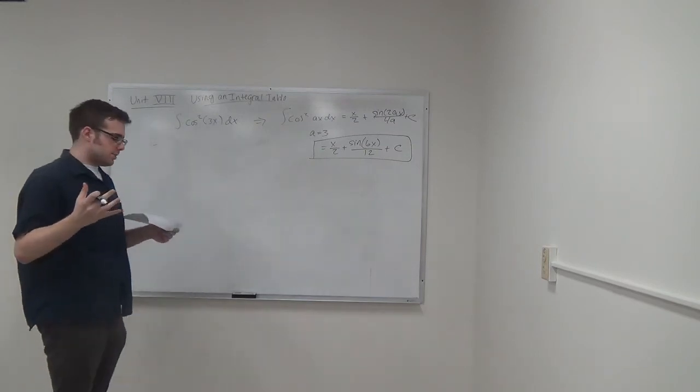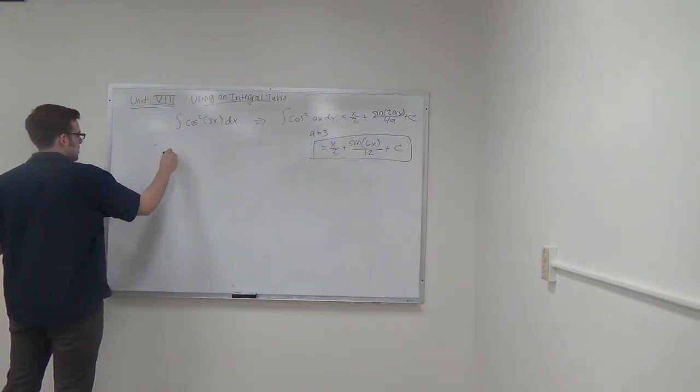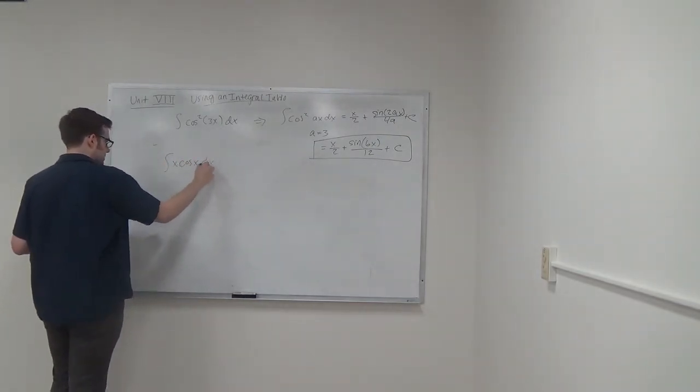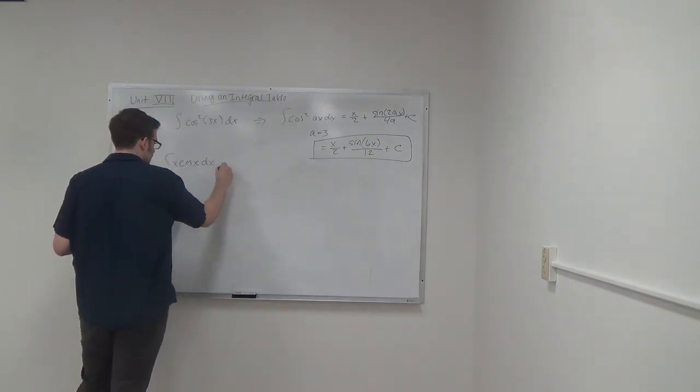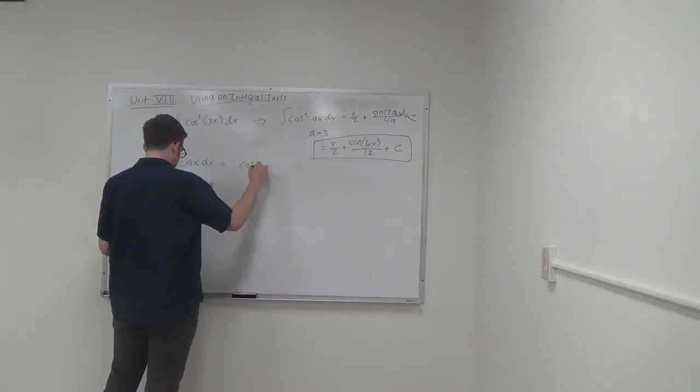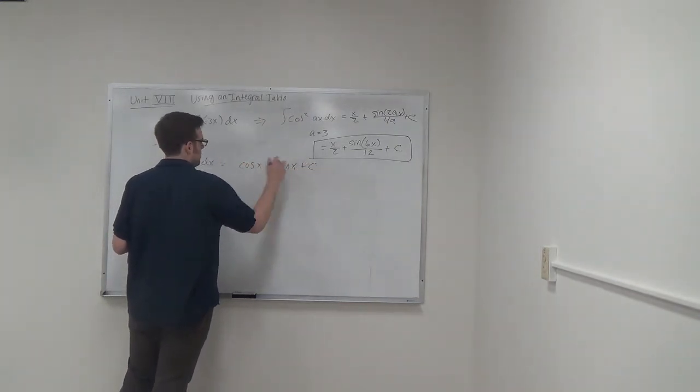And then just a very simple example where we're just looking at the table of integrals. The integral of x times the cosine of x dx. The integration table tells us that this is equal to cosine of x plus x sine of x plus c.